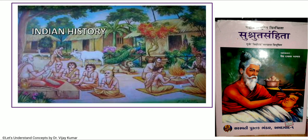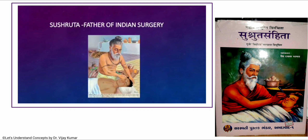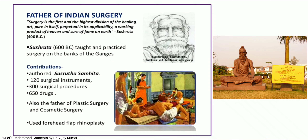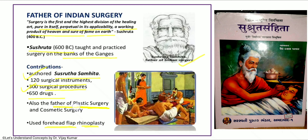Coming to the Indian history — the father of Indian surgery, Sushruta, said that surgery is the first and highest division of healing art, pure in itself, perpetual in its applicability, a working product of heaven and source of fame on earth. This was told by Sushruta in 400 BC. In 600 BC, he taught and practiced surgery on the banks of the Ganga. His contributions include the Sushruta Samhita, 120 surgical instruments, 300 surgical procedures, 650 drugs, and the forehead flap rhinoplasty. He is considered the father of plastic surgery and cosmetic surgery.